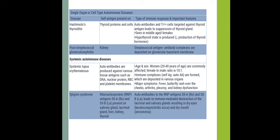Systemic autoimmune diseases include SLE, where auto-antibodies are produced against various tissue antigens such as DNA, nuclear proteins, RBC, and platelet membranes. SLE predominantly affects women aged 20–40, with a female-to-male ratio of 10:1. Autoimmune complexes are deposited in various organs, with major symptoms including fever and a butterfly rash over the cheeks.